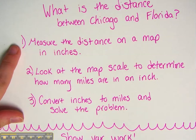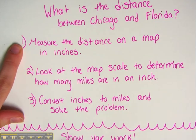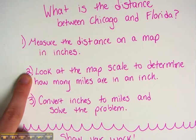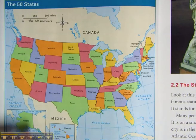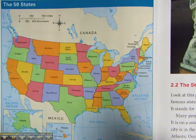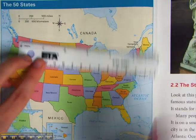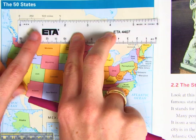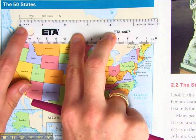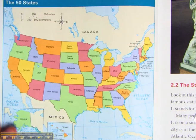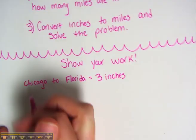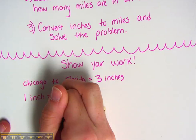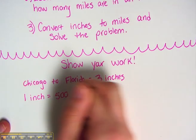So I finished step number one — measure the distance on a map in inches. Step number two, I need to look at my map scale to determine how many miles are in one inch. When you look at our map, our map scale is right up here next to our compass. I need to measure, and I see that for every 500 miles, it measures to about an inch on my ruler. I'm using the inch side again. One inch equals 500 miles. This is important, I'm going to write this down: one inch is equal to 500 miles.